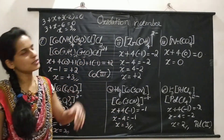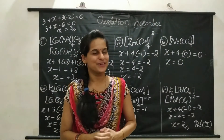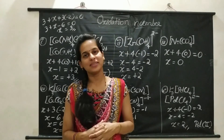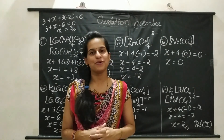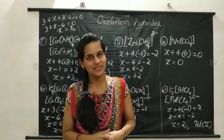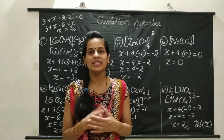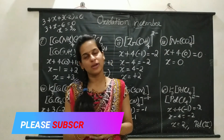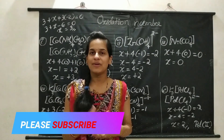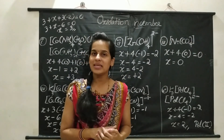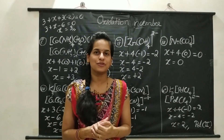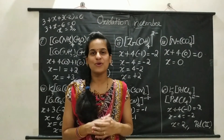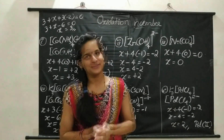That completes the calculation of oxidation number. Friends, I hope this calculation of oxidation number and tricks to remember the ligands are helpful for you. Please write your opinion about this video in the comment section. If you have any doubts about calculating the oxidation number of the central metal atom in any coordination complex, please write your doubts in the comment section — I will try to solve them. Please like and share this video with your friends. Thank you.